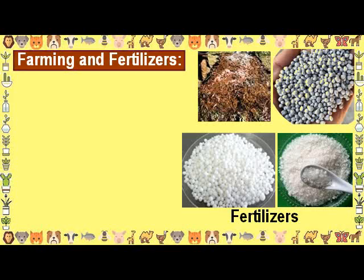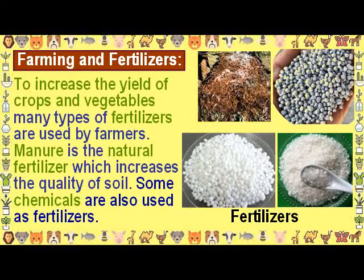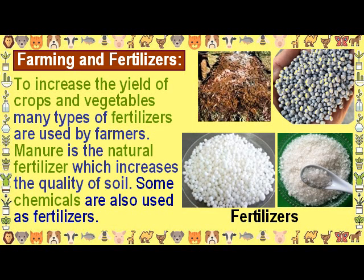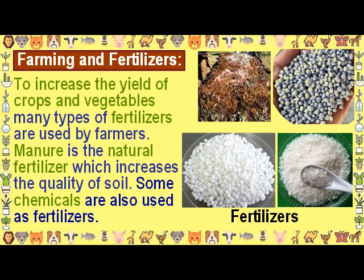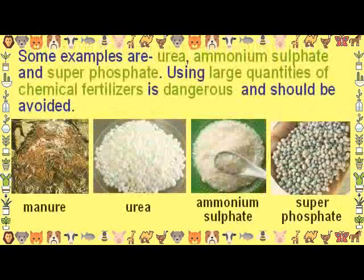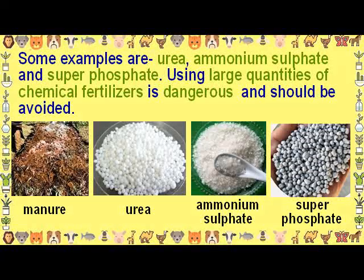Farming and Fertilizers. To increase the yield of crops and vegetables, many types of fertilizers are used by farmers. Manure is the natural fertilizer which increases the quality of soil. Some chemicals are also used as fertilizers. Examples include urea, ammonium sulfate and superphosphate. Using large quantities of chemical fertilizers is dangerous and should be avoided.